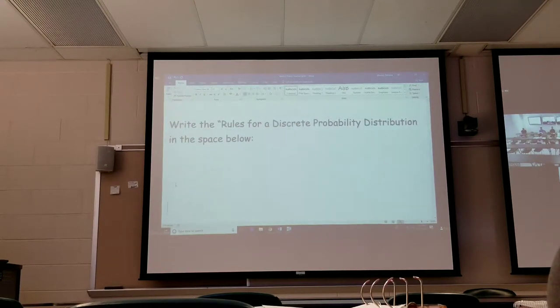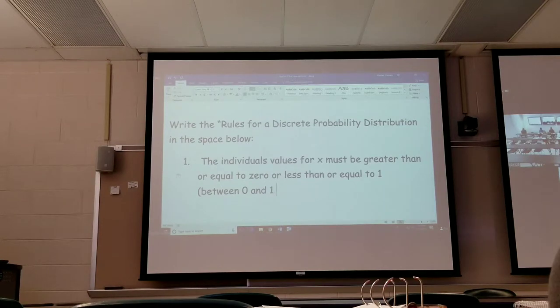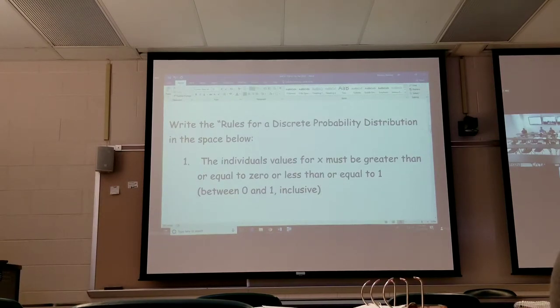We're going to write rules for discrete probability distribution. There are two. One, the individual values for X must be between zero and one inclusive. We could say greater than or equal to zero and less than or equal to one. That just means between zero and one. It can be zero, it can be one, it can be between.